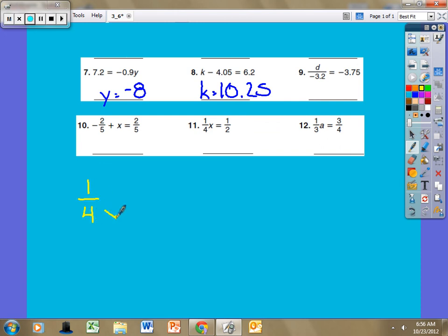I'm going to rewrite it down here, just so I have some more room to operate. One-fourth of x is equal to a half. So I'm taking a fourth of something, and whatever I'm taking a fourth of, that's equal to one-half. Now this says one-fourth times x. Well, I really want to divide by one-fourth.